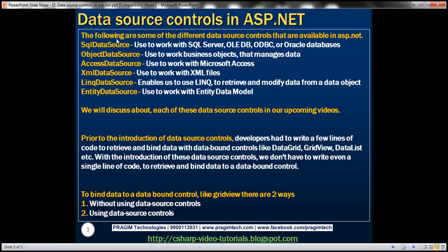There are several of them as you can see on the slide. For example, if I have some data in an XML file and I want to retrieve data from that XML file and bind it to a GridView control, I can make use of the XML data source control. If my data is stored in a Microsoft Access database, I can make use of Access data source. If my data is in a SQL Server database, I use the SQL data source control. For an Oracle database, again, SQL data source.